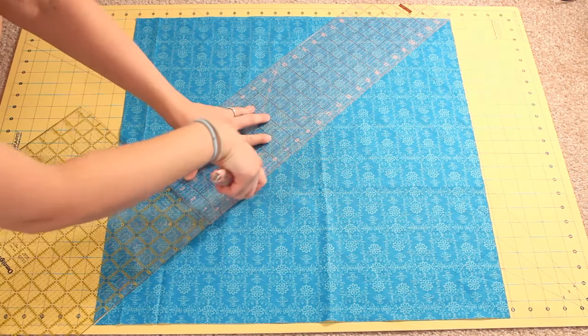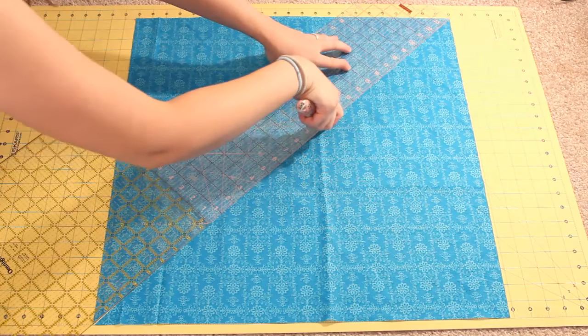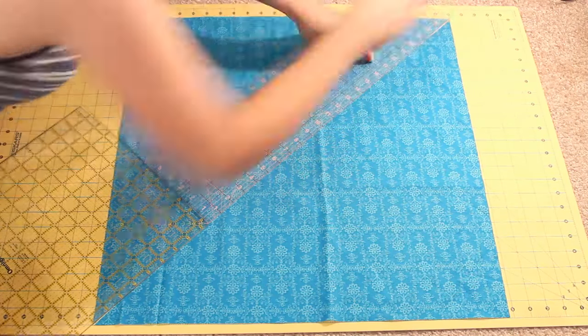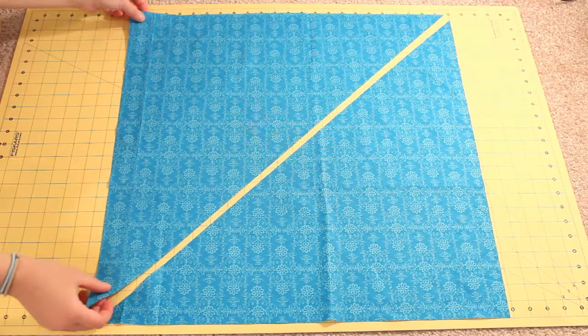If you have a yard stick that will work great. If not you can use two rulers butted up together like I showed. You will end up with two equal triangles.